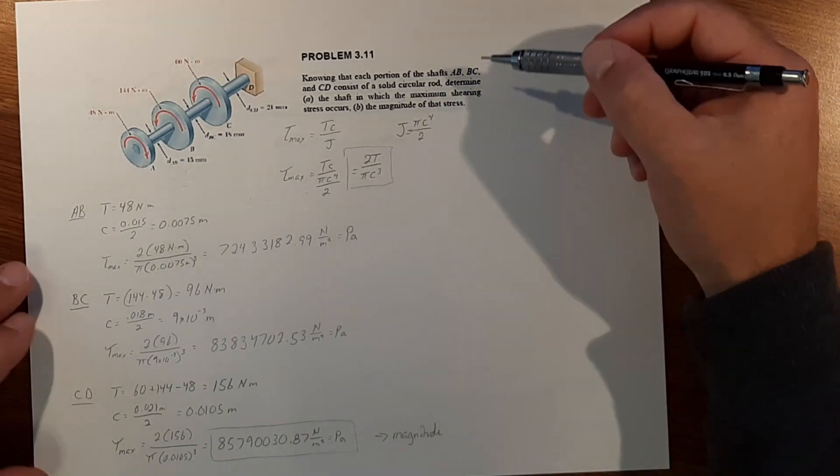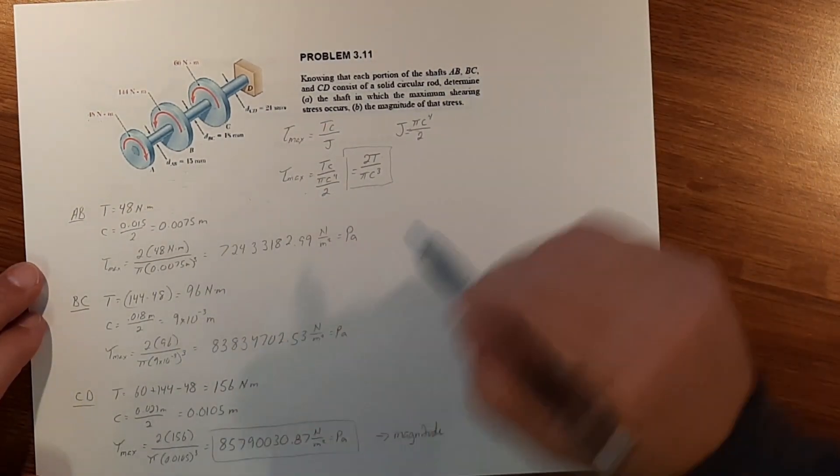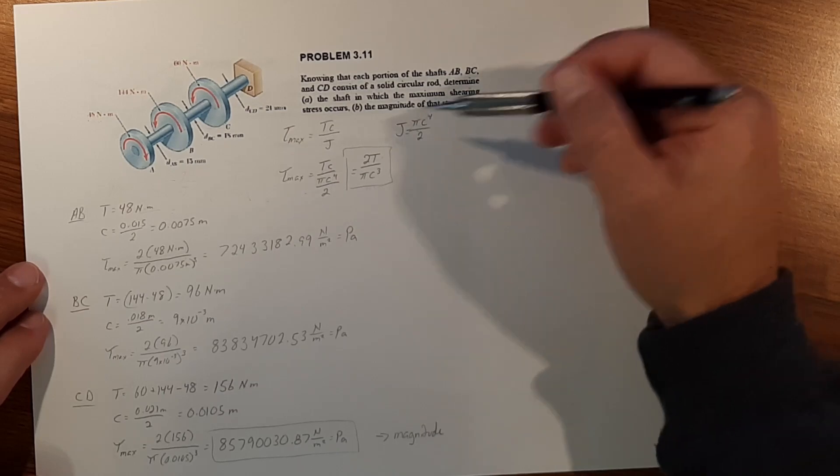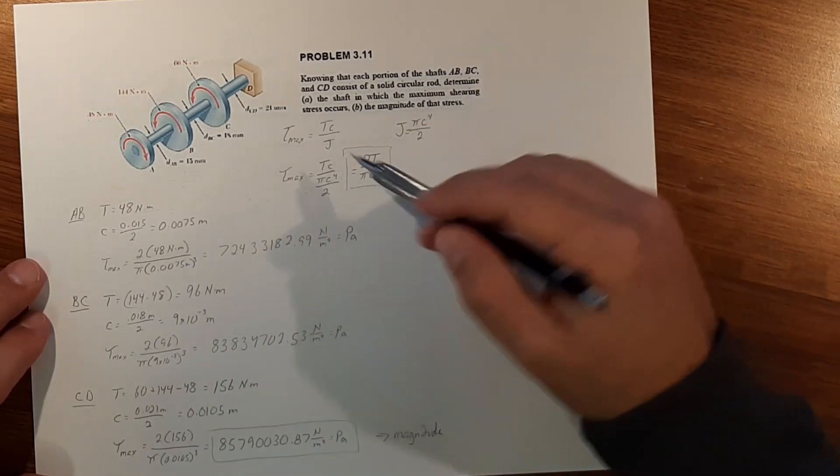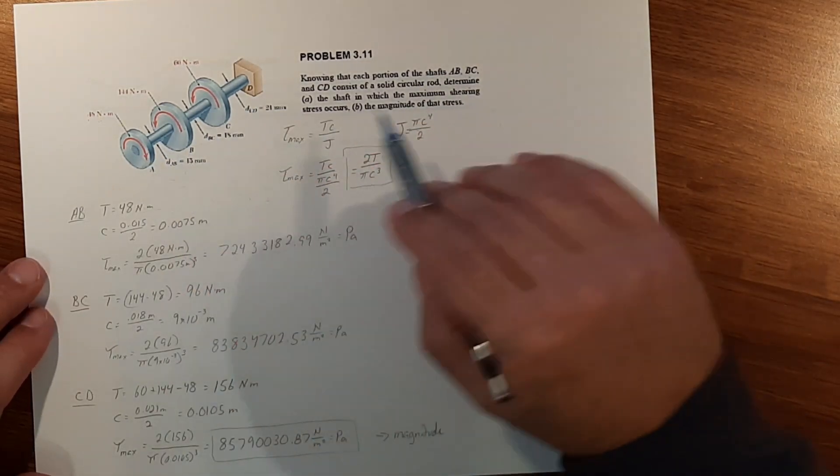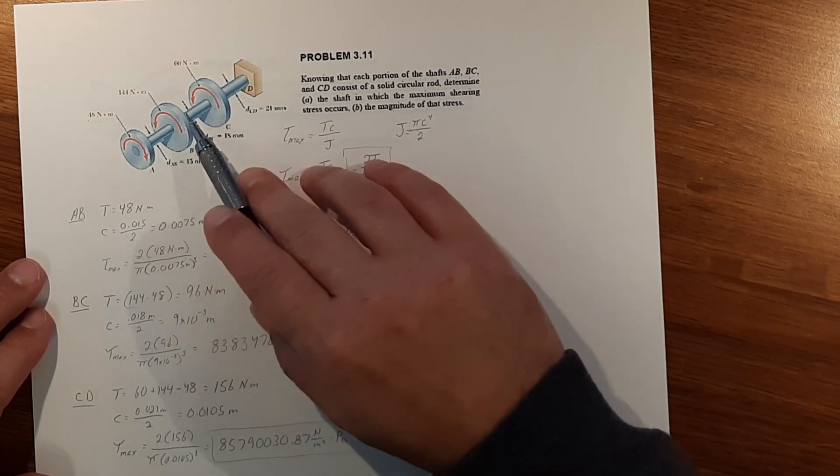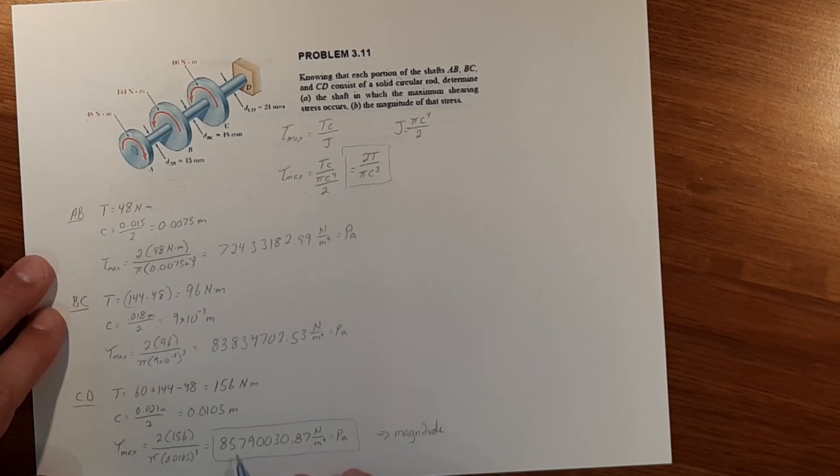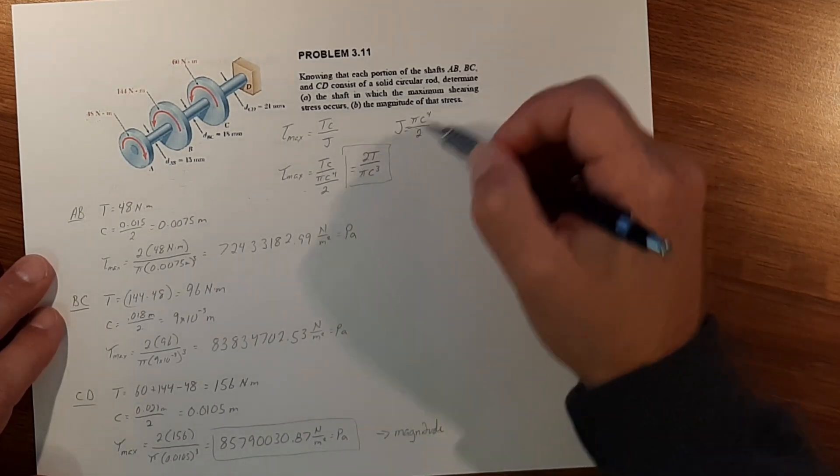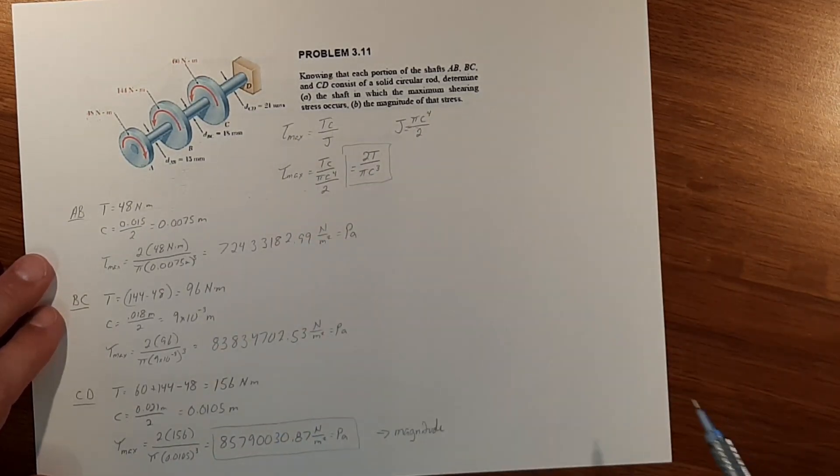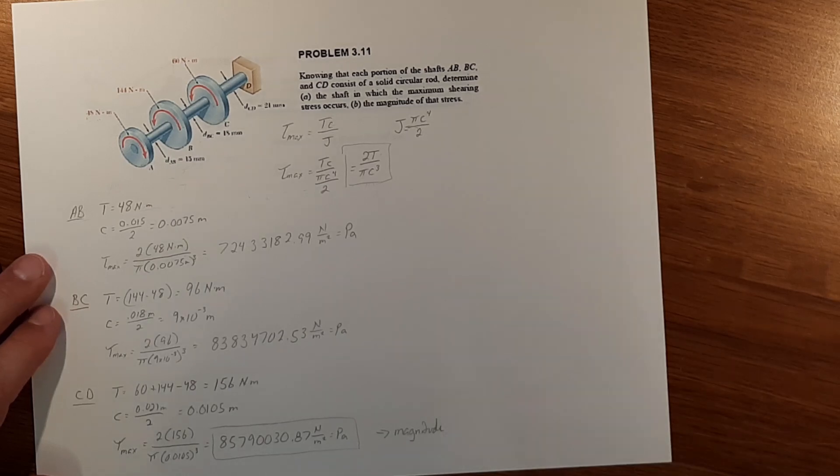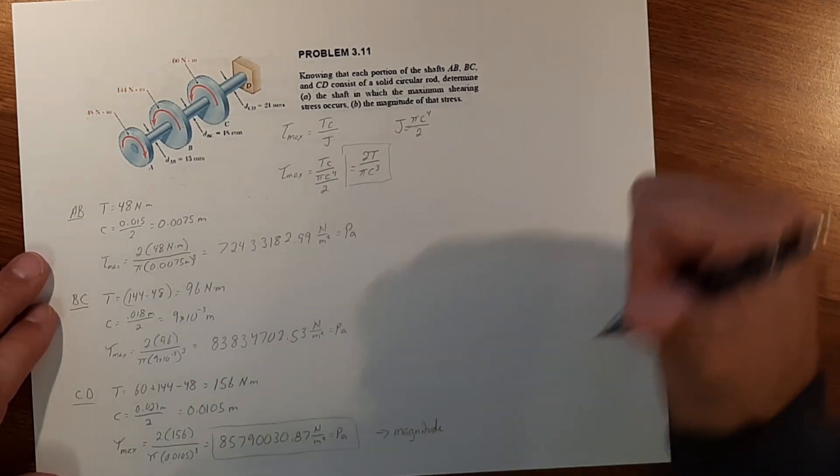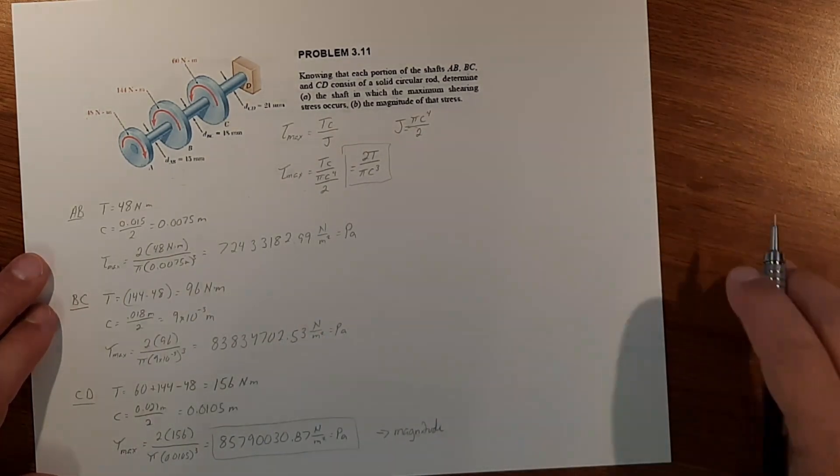So to find which portion of a shaft has the maximum shearing stress that occurs in it, if you break it up and solve for the shearing stress in each individual section of the shaft, the shaft with the highest shearing stress is the answer. If you like this and it helped you out give it a thumbs up and I'll see you on the next problem.